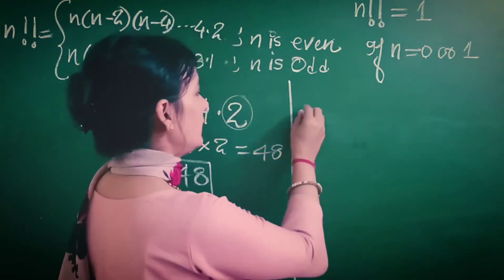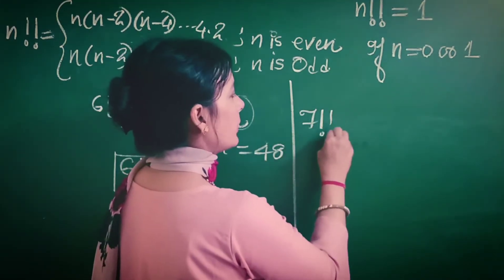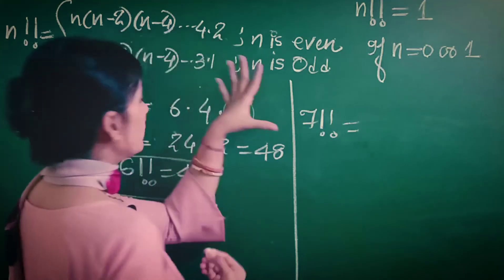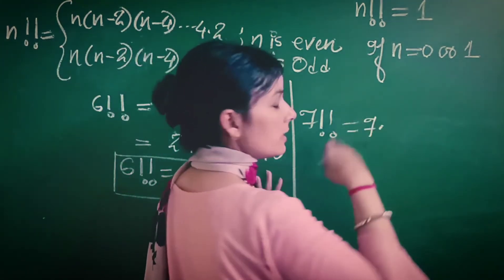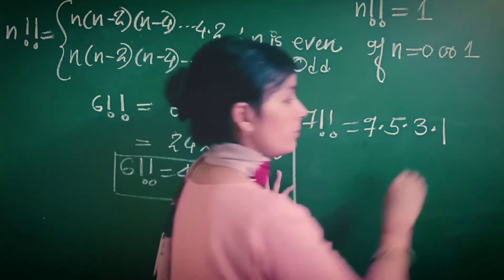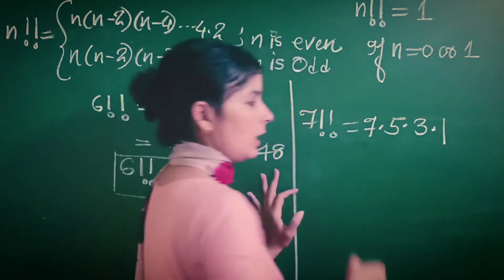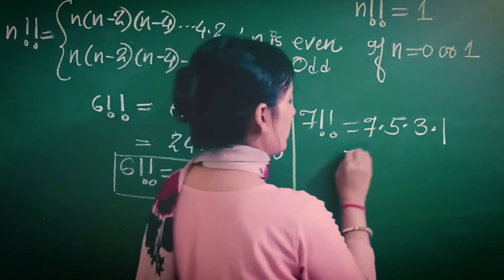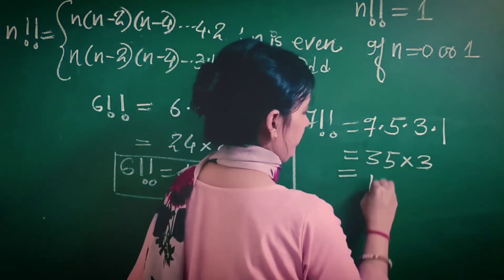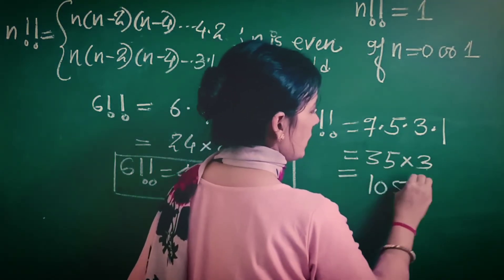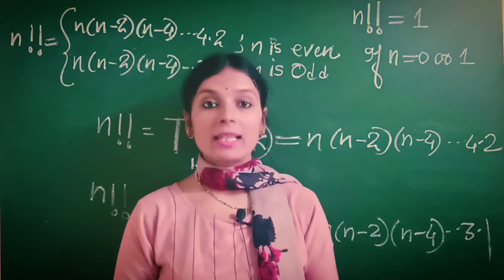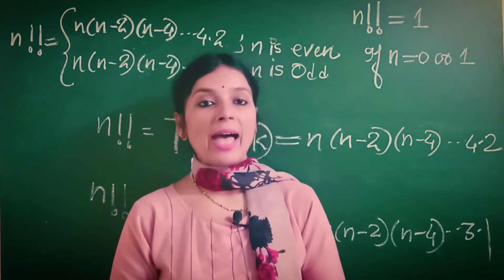Let's try one more example: 7 double factorial. Since 7 is an odd number, we do 7 − 2 = 5, then 5 − 2 = 3, then 3 − 2 = 1, and 1 is the endpoint. Multiplying: 7 × 5 × 3 × 1 = 105. So 7!! = 105.